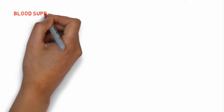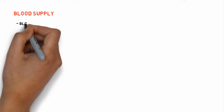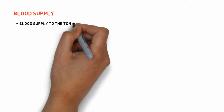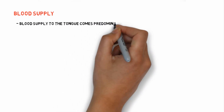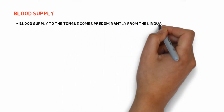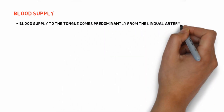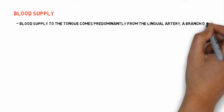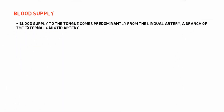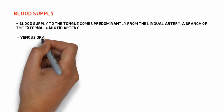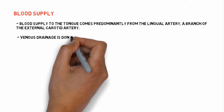Coming to the blood supply of the tongue: blood supply comes predominantly from the lingual artery, a branch of the external carotid artery. There are other arteries which also supply the tongue, like the tonsillar artery.